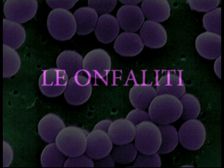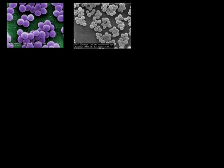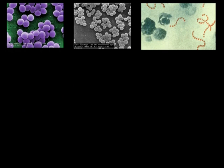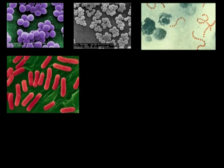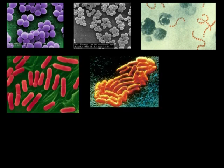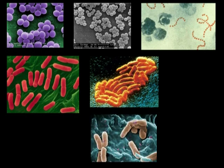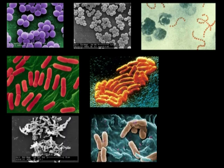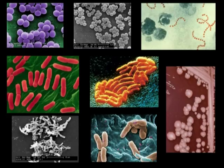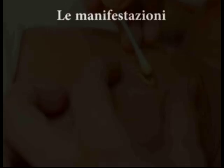Spesso le onfaliti sono polimicrobiche, ma i batteri maggiormente coinvolti sono Staphylococcus aureus, Staphylococcus epidermidis, Streptococcus pyogenes, Escherichia coli, Klebsiella pneumoniae, Pseudomonas, Clostridium difficile e Proteus mirabilis. Le manifestazioni consistono in essudato purulento e maleodorante, rossore, eritema.